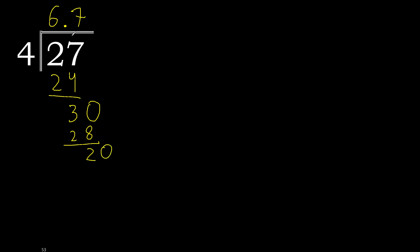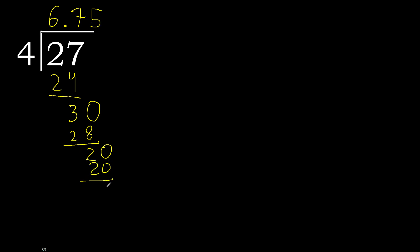Always complete with 0. The decimal point is here. Bring down to get 20. 4 multiply by 5 is 20. Subtract — remainder is 0.